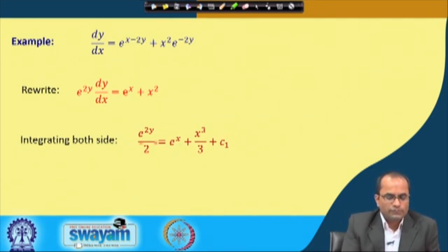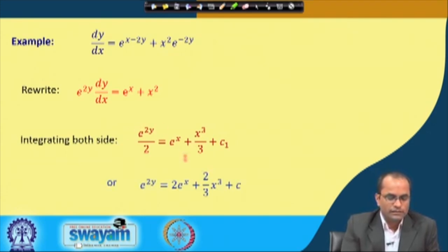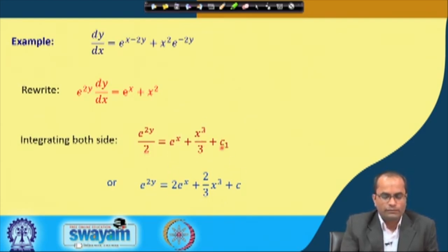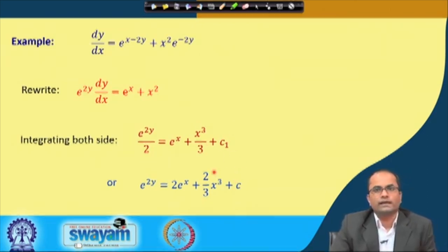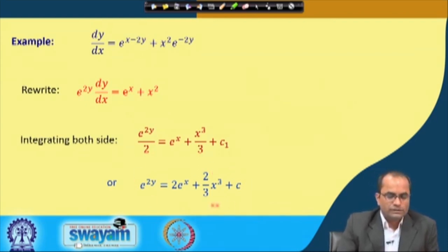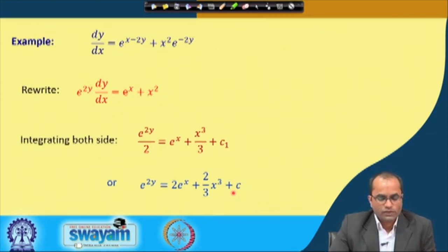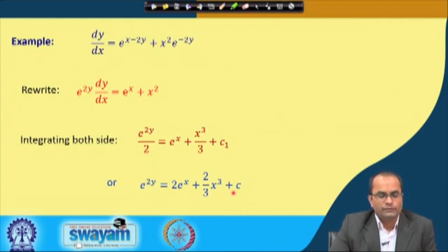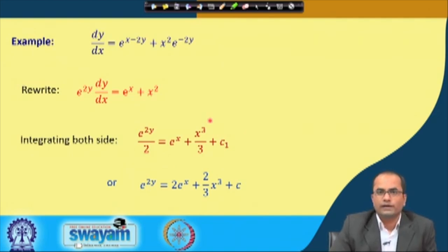Multiplying through by 2 to simplify, we get e^(2y) = 2e^x + (2/3)x³ + C, where C = 2c₁. This is the solution given in implicit form — the implicit solution of the given differential equation. By separating variables it was easy to integrate and find the solution. This is one of the very basic techniques for solving differential equations.